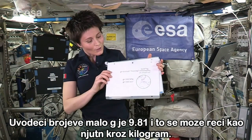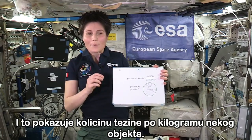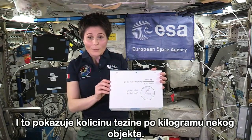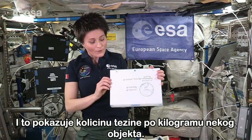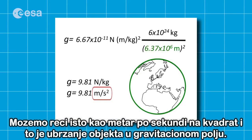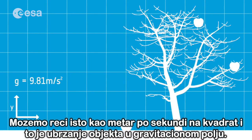Introducing numbers, we determine small g as being equal to 9.81, and that can be expressed in newtons per kilogram, which basically represents the amount of weight per kilogram of an object at that particular point in the gravitational field. Or equivalently, it can be expressed as meters per square second, which is the acceleration of a free-falling object in the gravitational field.